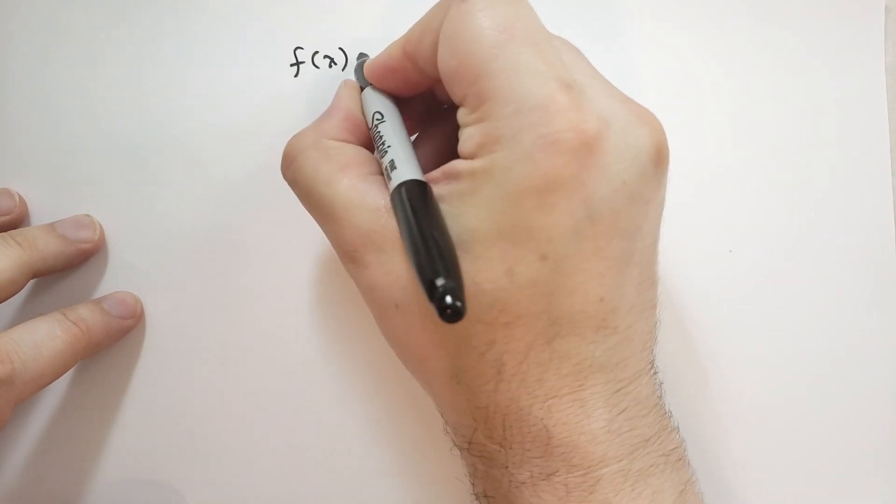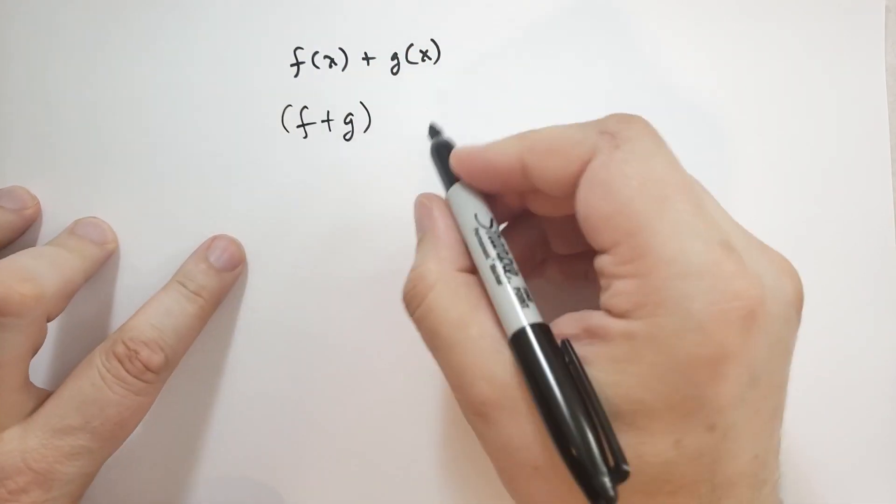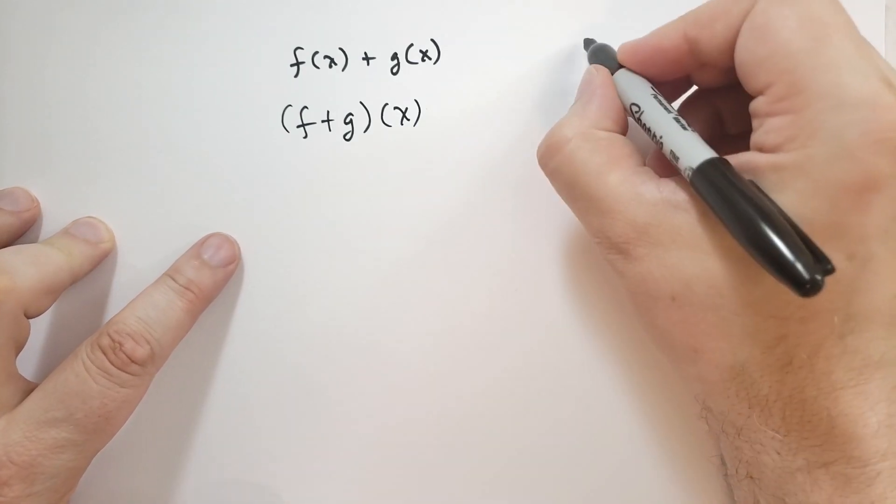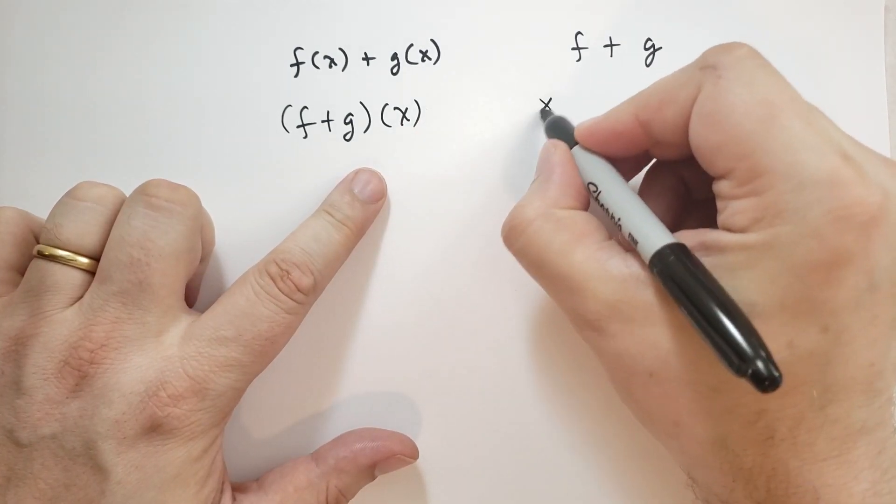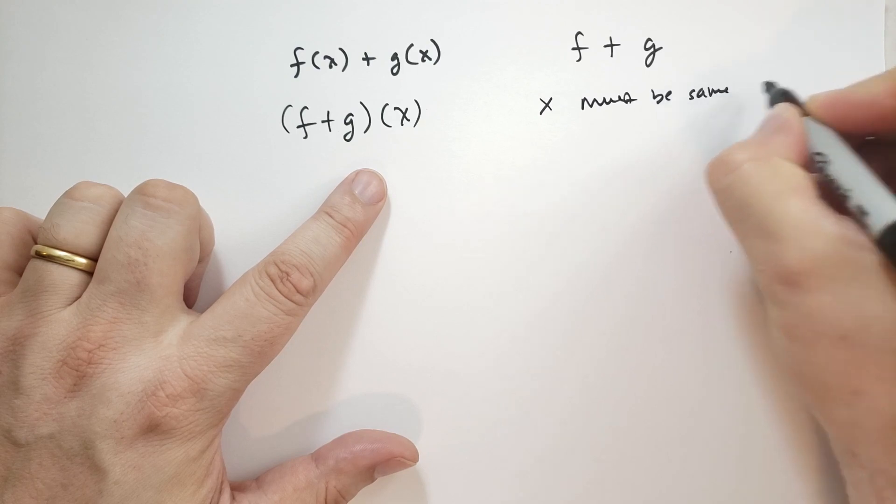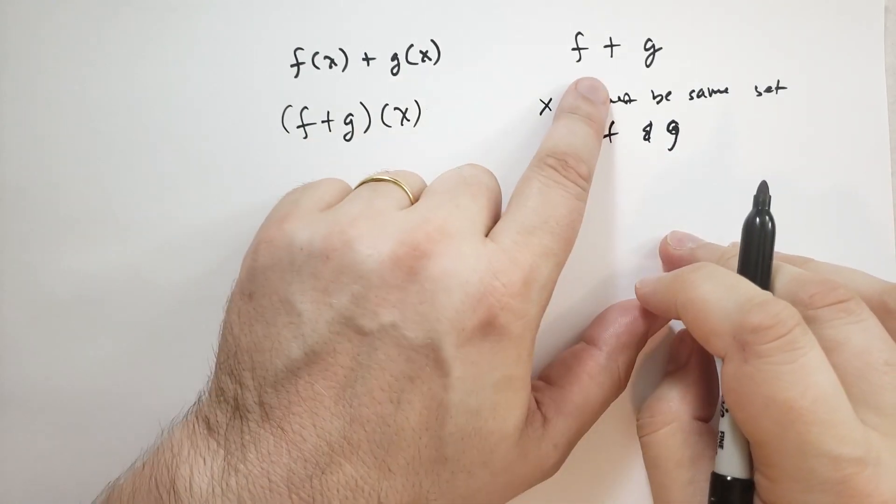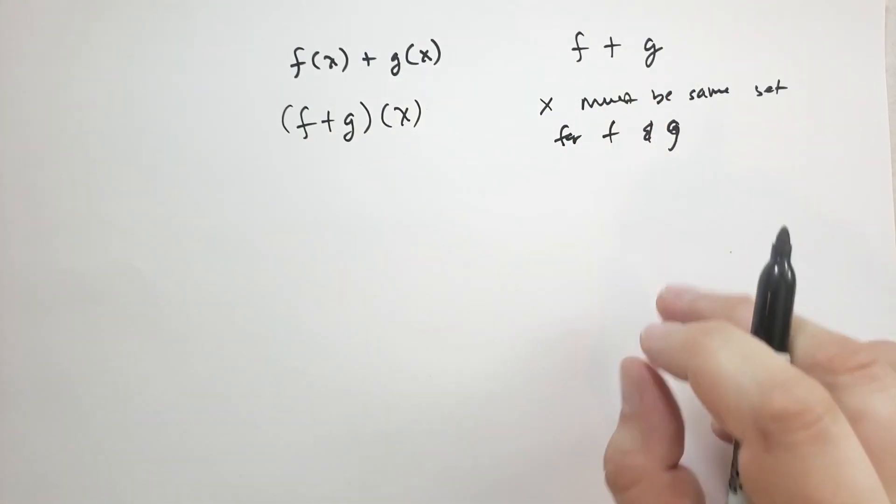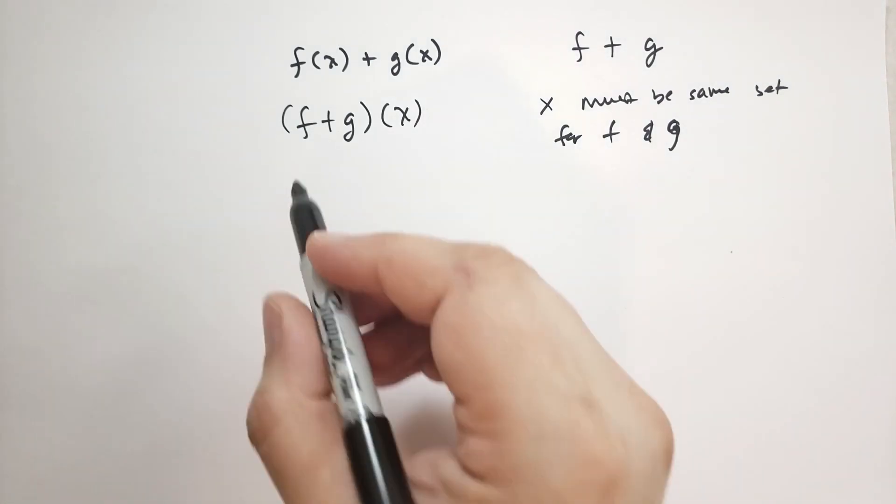Let's talk about composing functions together, putting them together to make new functions. So we often add functions together. As kind of a shorthand, we will rewrite the sum of two functions in this way. Or you might even see like f plus g. Now the important rule here is that x must be in the same set for f and g. So if f only operates on positive numbers and g operates on all numbers, we're going to have a problem because this won't be defined for functions, for values that are negative or zero.